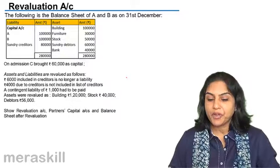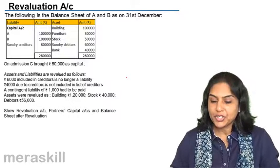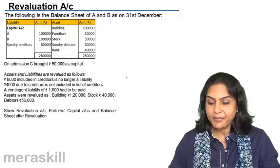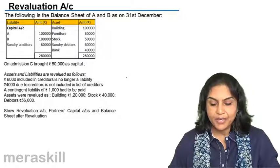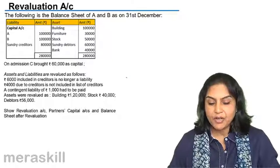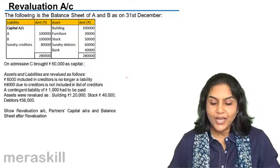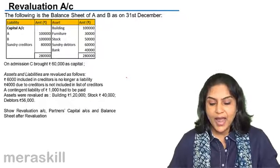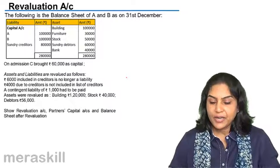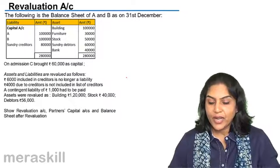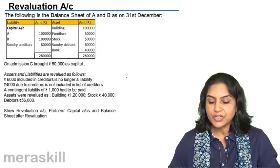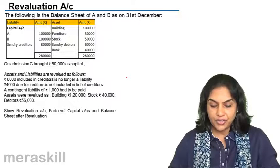A short problem. The following is the balance sheet of A and B as on 31st December. Capital accounts are 1 lakh and 80,000. Building 1 lakh, furniture 30,000, stock 50,000, debtors 60,000, and bank 40,000.